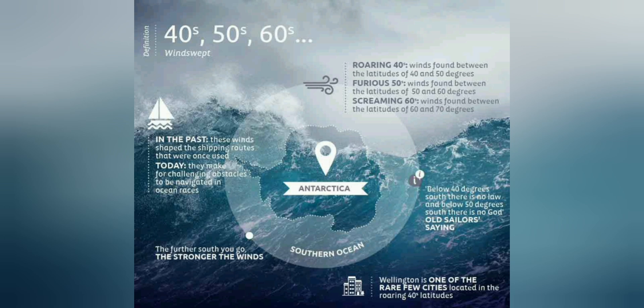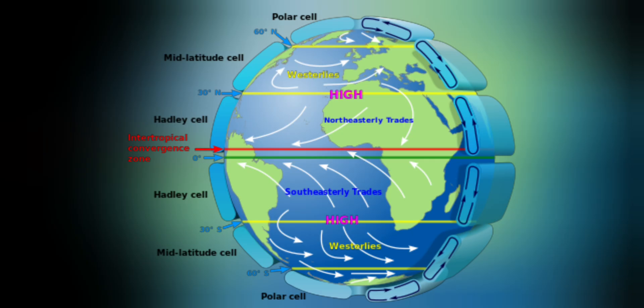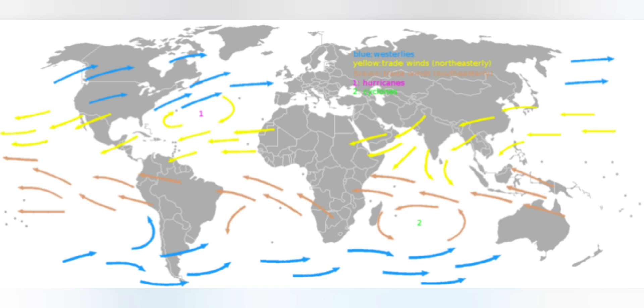The trade winds and westerlies are emitted from the horse latitudes, where the air that rises at the equator comes back down, forming two high-pressure belts around the earth. The trade winds are dragged in towards the equator by the pressure differential caused by all the air rising at the equator, while the westerlies are pushed poleward by the high pressure at the horse latitudes, moving towards the lower pressure of the poles. This would lead to the winds going straight north or south, if not for the rotation of the earth.